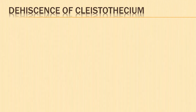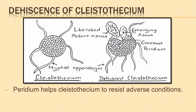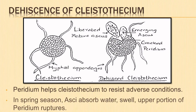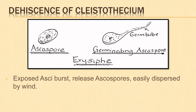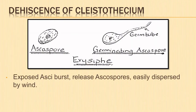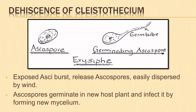Let us look into the mechanism of dehiscence of the cleistothecium. The peridium helps the cleistothecium to resist adverse conditions. In spring season, the asci absorb water and swell, resulting in the rupture of the upper portion of the peridium. The asci are exposed, they burst, and ascospores are released and easily dispersed by wind. The ascospores germinate immediately when they come in contact with the host plant and infect it by forming new mycelium.